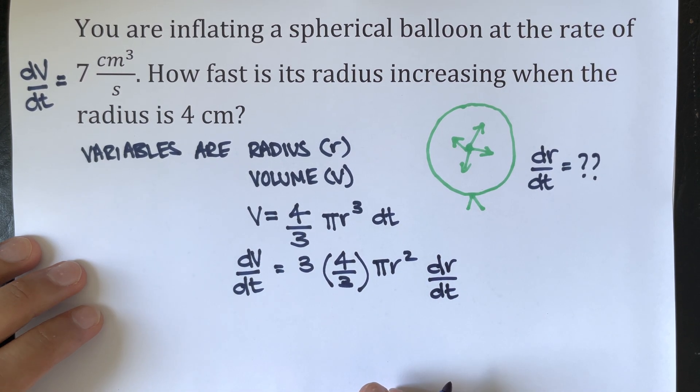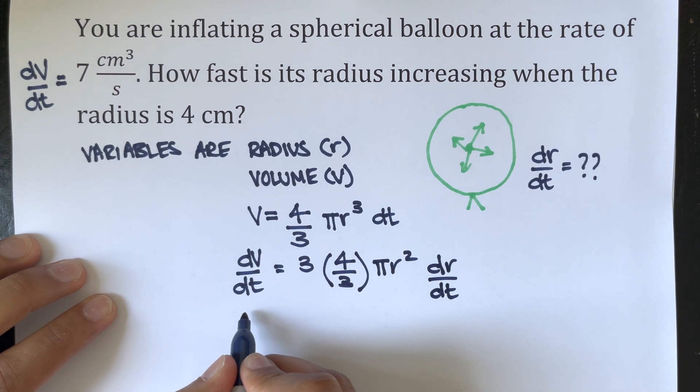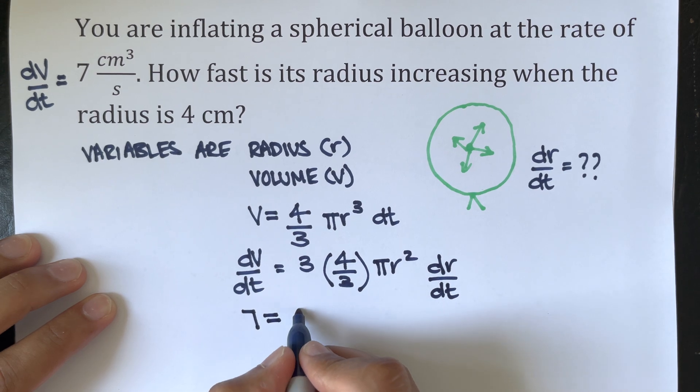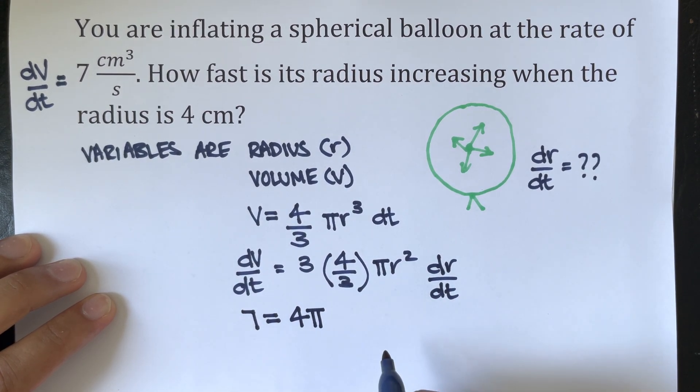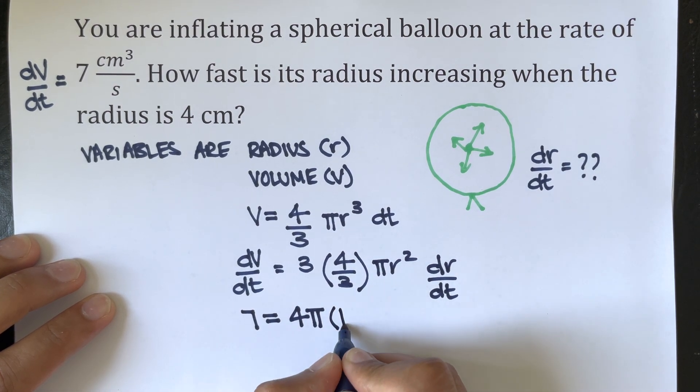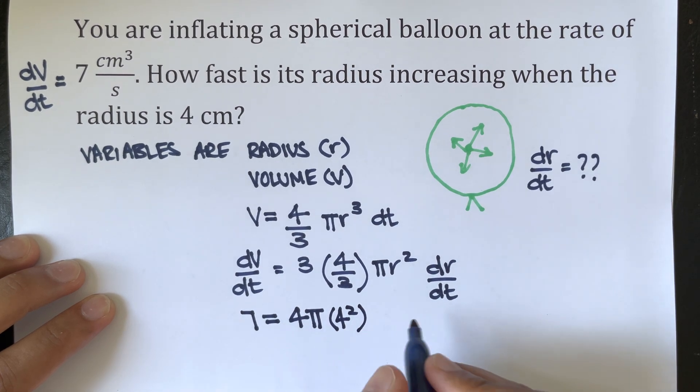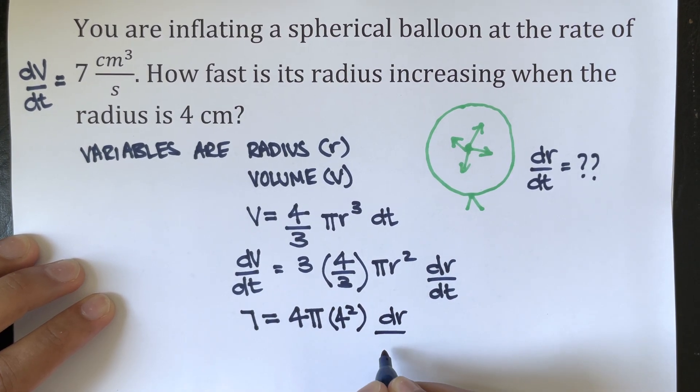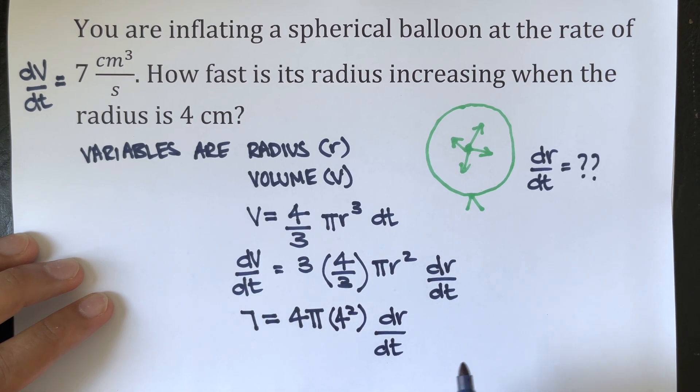Now we can plug in some values. We've got 7 equals 4π r². We know r as 4, so it'll be 7 = 4π(4²) dr/dt.